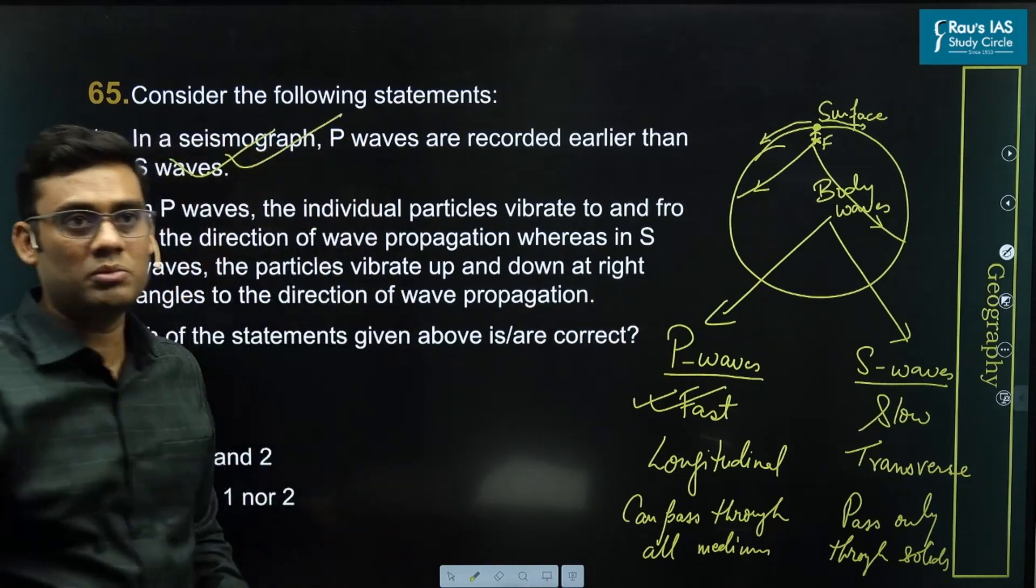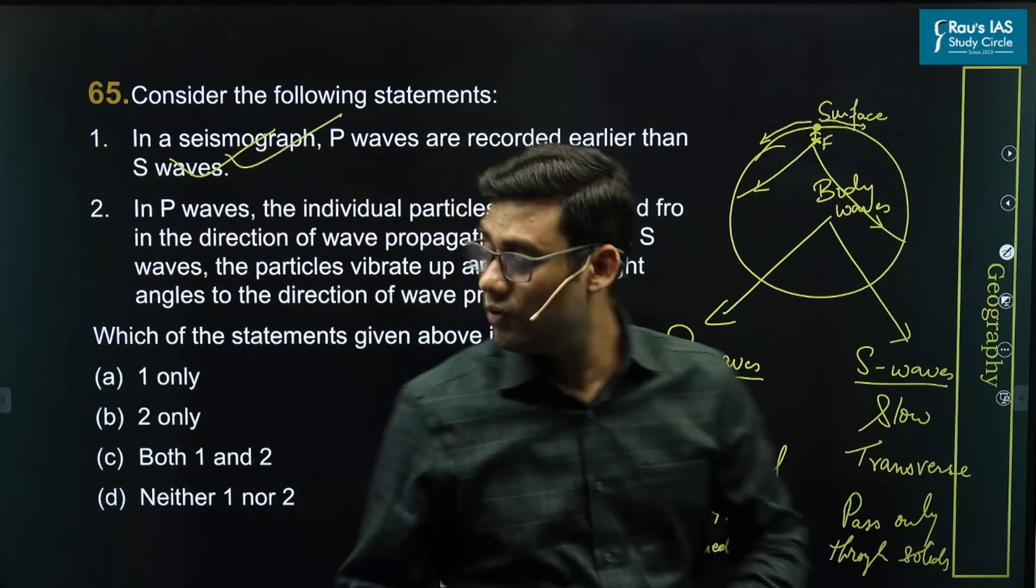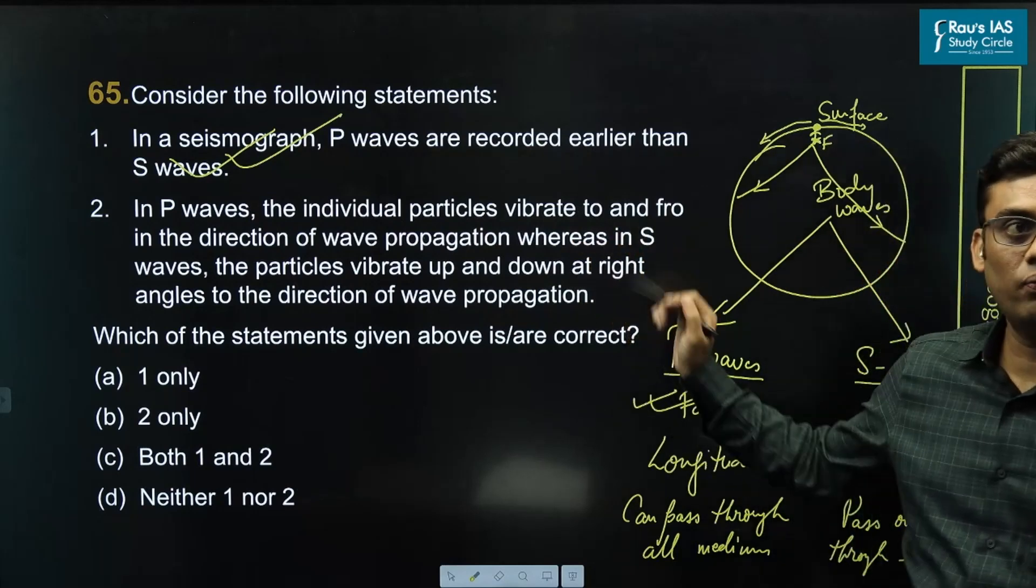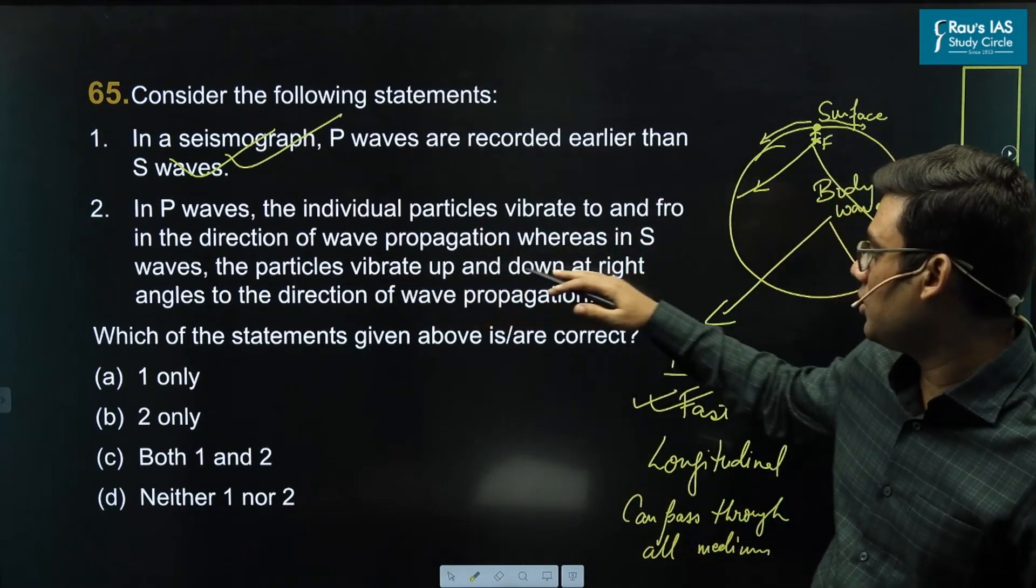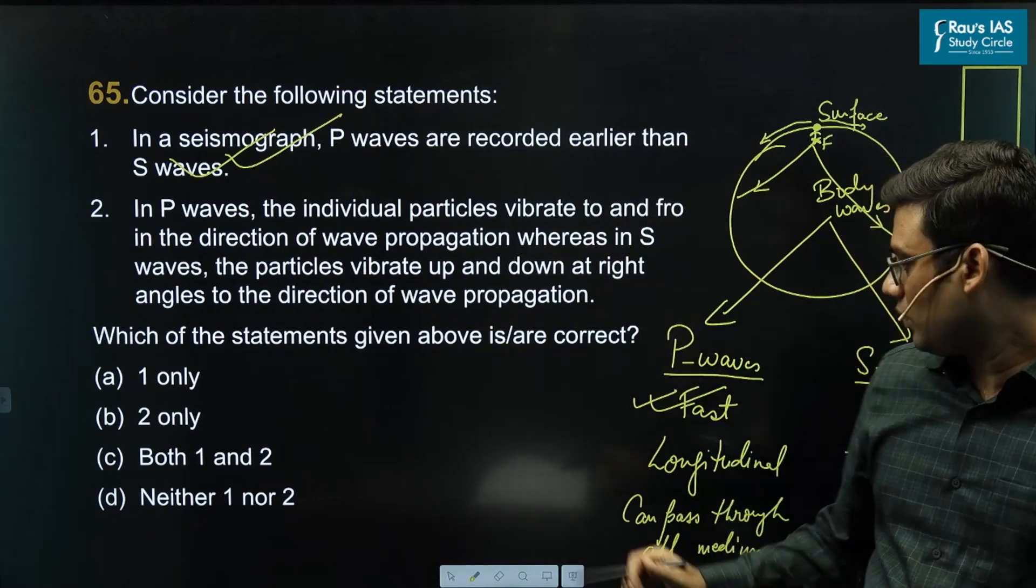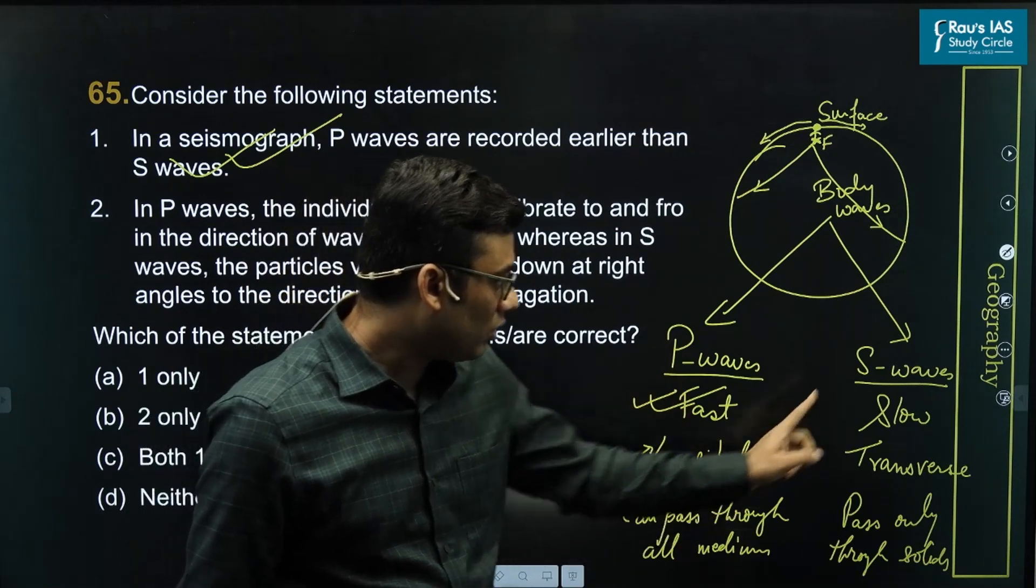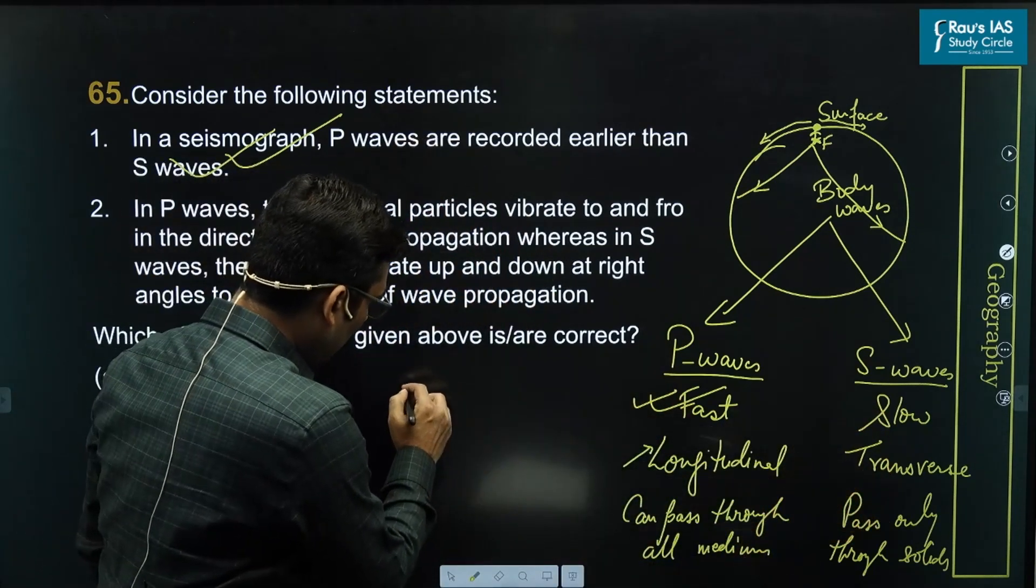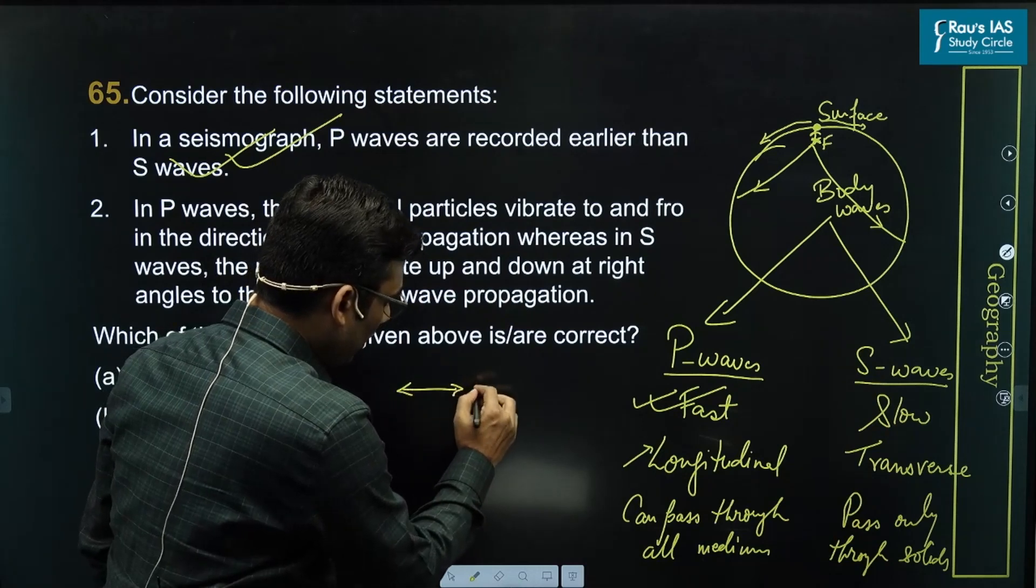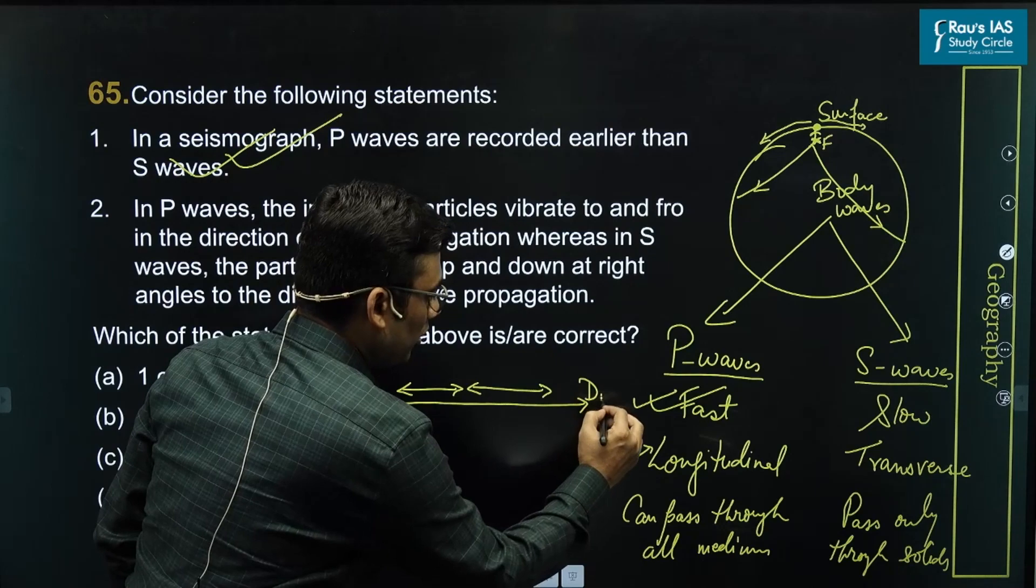The second statement: in P waves, the individual particles vibrate to and fro, whereas in this case, the particle vibration up and down. This is where the second difference will come in handy. P waves are longitudinal, S waves are transverse. Now, longitudinal waves are those waves in which the particle vibration is like this. If I take direction of propagation to be here.